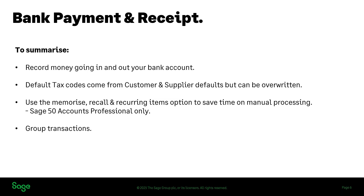To summarize the session: bank payments and receipts record money going in and out of your bank account. Default tax codes come from customer and supplier defaults but can be overwritten. If you have Sage 50 Accounts Professional, you can use memorize, recall, and recurring items to save time on manual processing. You can also group bank transactions to make reconciliation easier within bank activity and bank reconciliation.